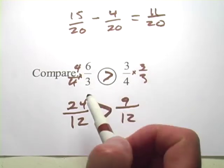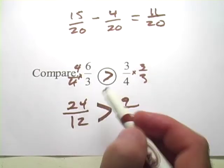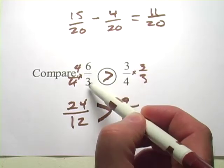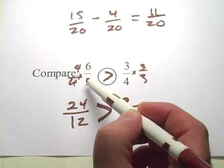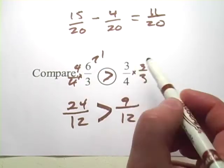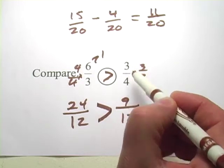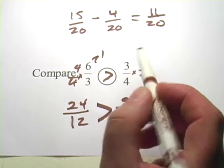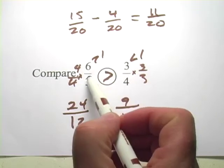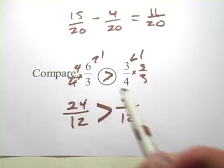Now you probably could have gotten that answer a lot quicker, because you might know that if the numerator, the number on the top, is bigger than the denominator, the number on the bottom, then the whole fraction is bigger than 1. So this guy is greater than 1. If the numerator is smaller than the denominator, then the whole fraction is less than 1. So if this is bigger than 1, this is less than 1, this one had to have been bigger.